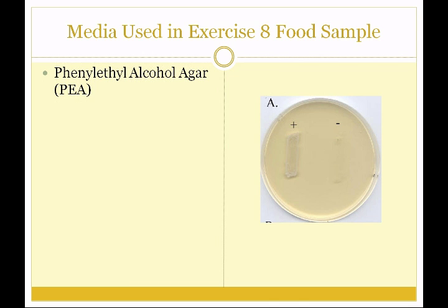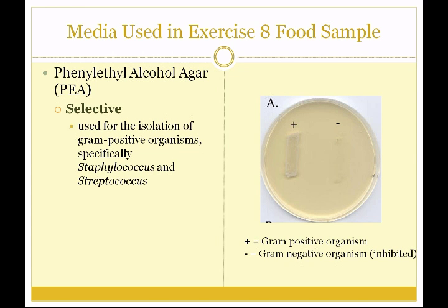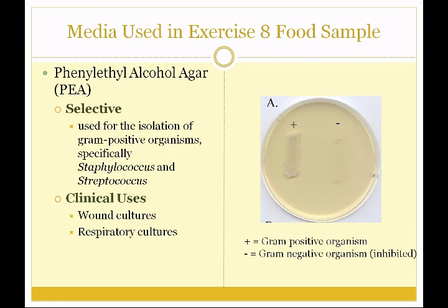We'll also be using phenylethyl alcohol agar or PEA. PEA agar is only selective; it's used for the isolation of gram-positive organisms, specifically Staphylococcus and Streptococcus. The gram-positive area shows heavy growth, while the gram-negative organism, though it might grow slightly, will be inhibited because the alcohol dissolves the outer membrane of the gram-negative organism. Clinical uses for PEA are wound cultures and respiratory cultures — any place we might find Staphylococcus or Streptococcus.